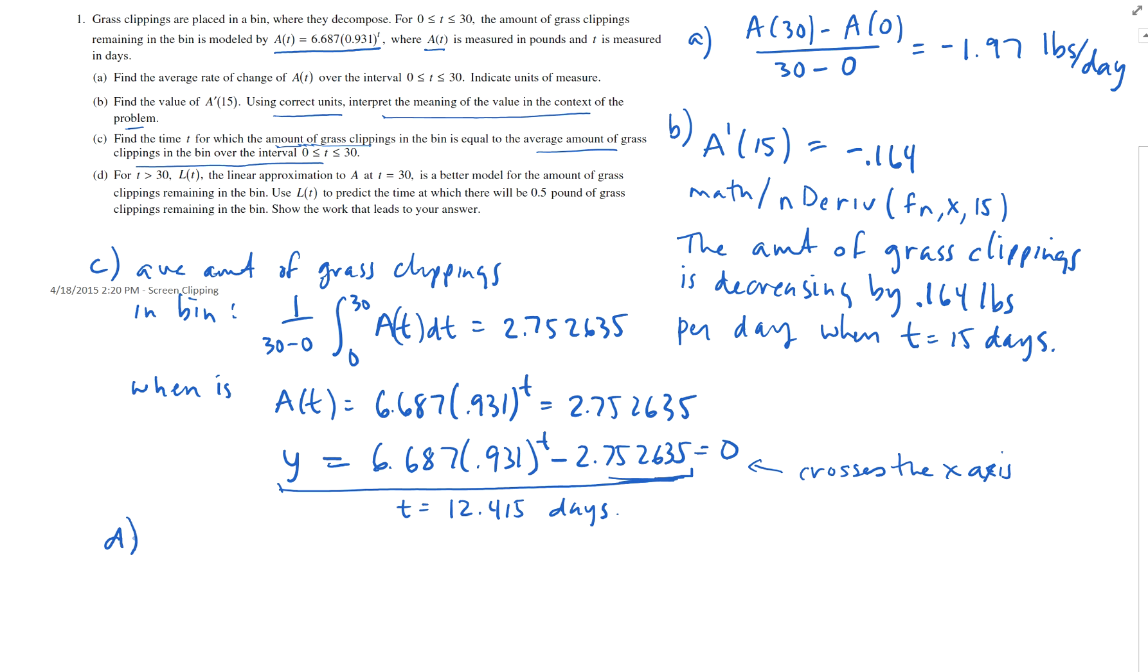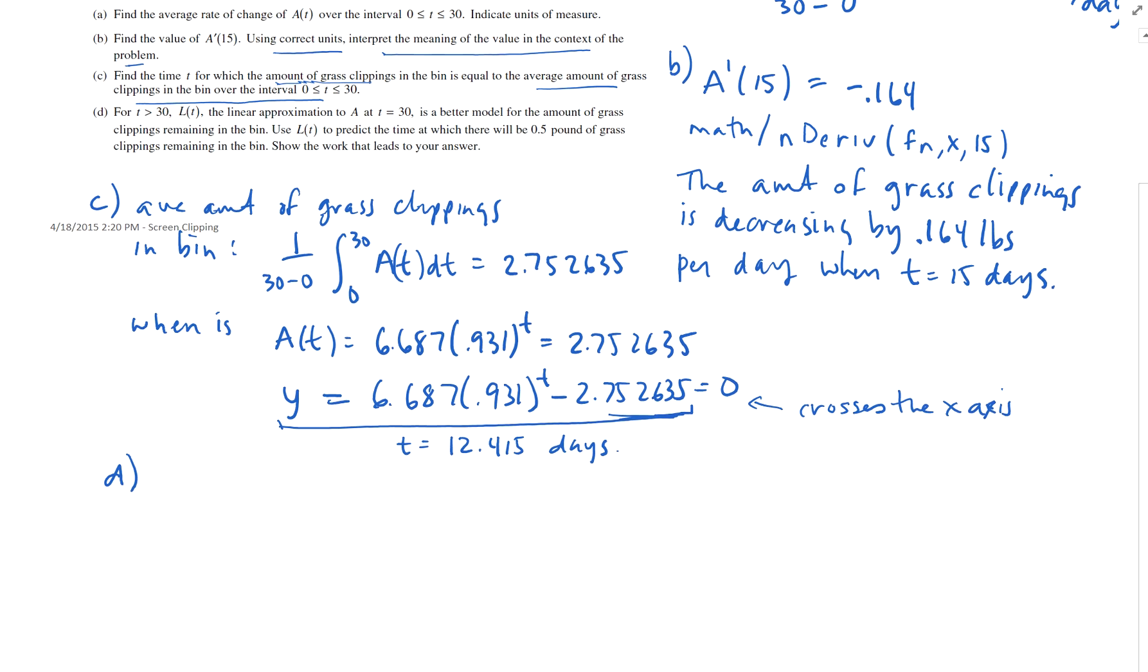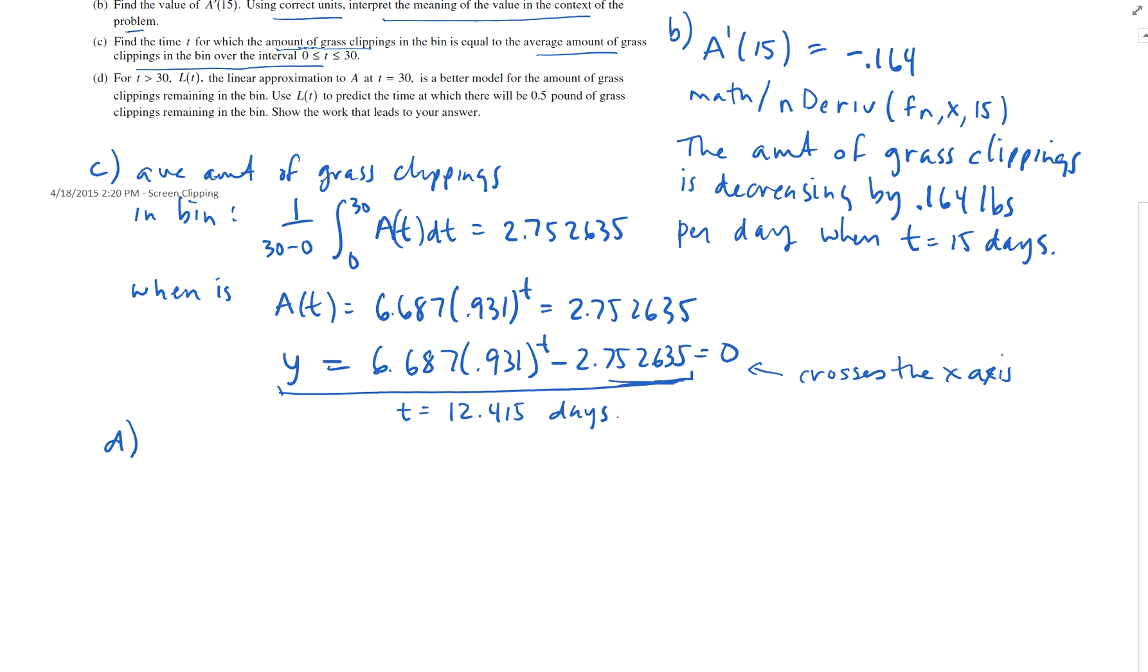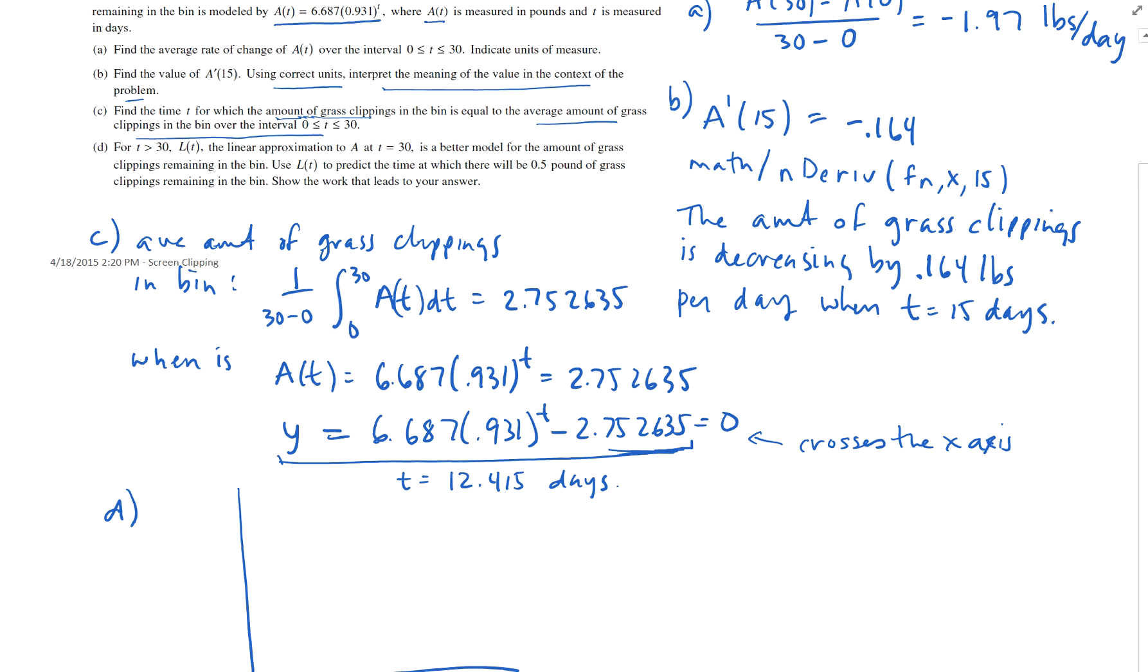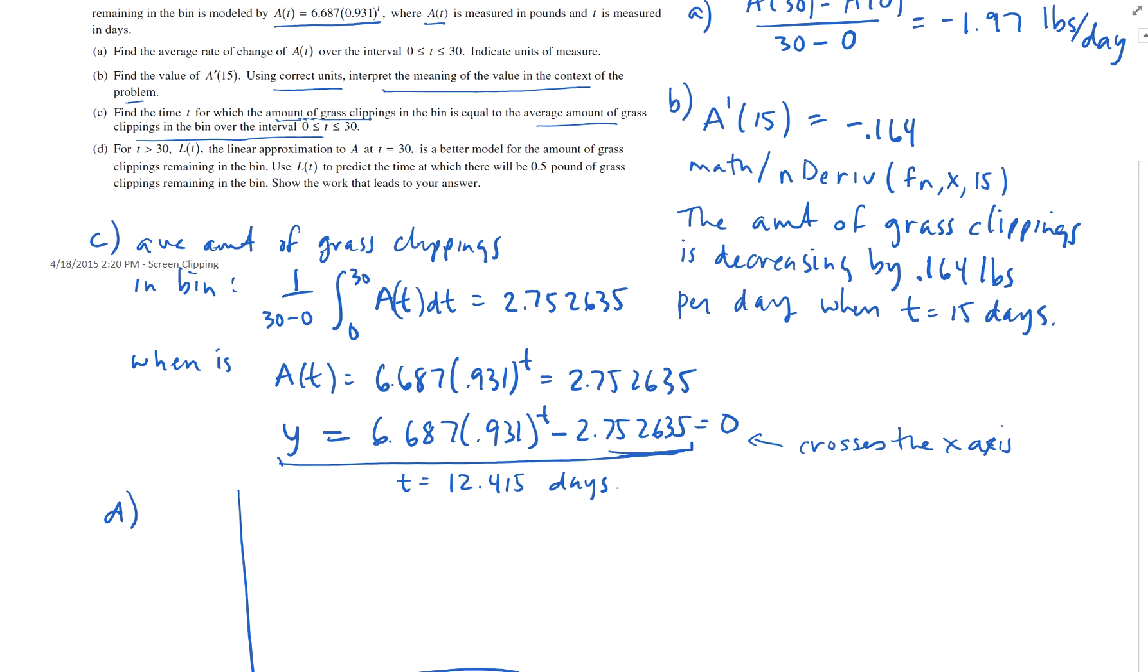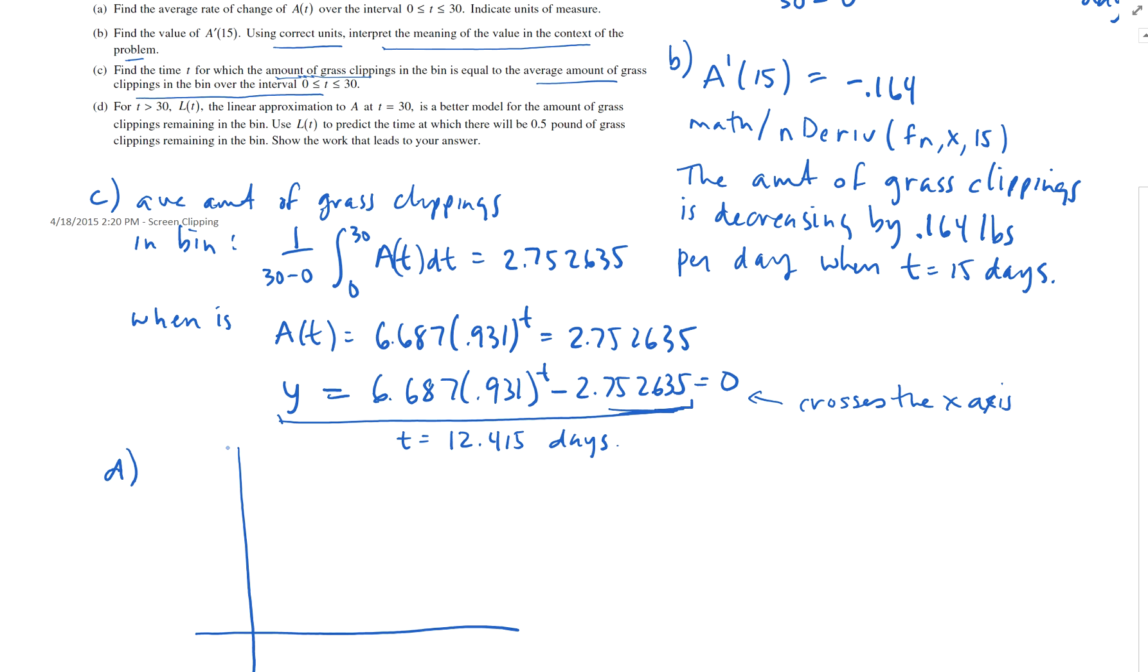And Part D, it says for t is greater than 30, L is a linear approximation of A at t equals 30 is a better model for the amount of grass remaining in the bin. Use L to predict a time at which there will be 0.5 pounds of grass in the bin. Show the work that leads to your answer.